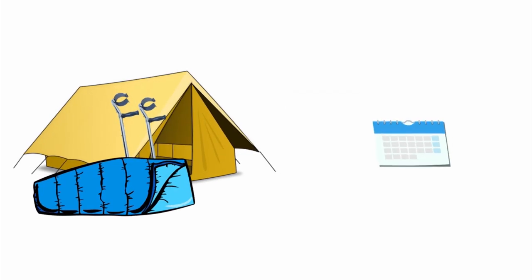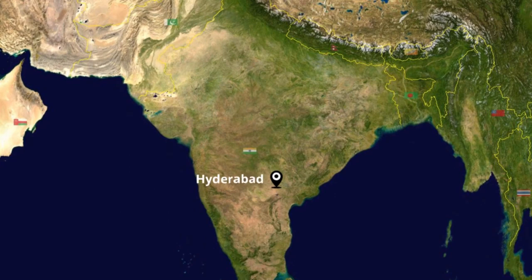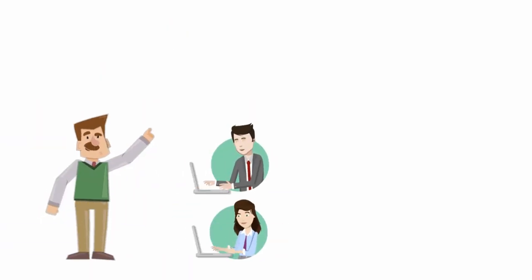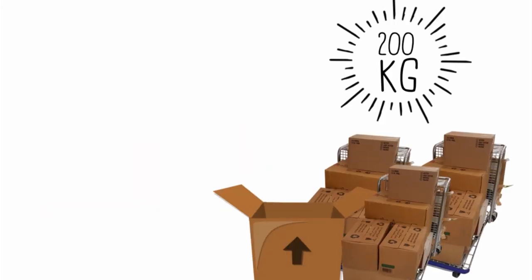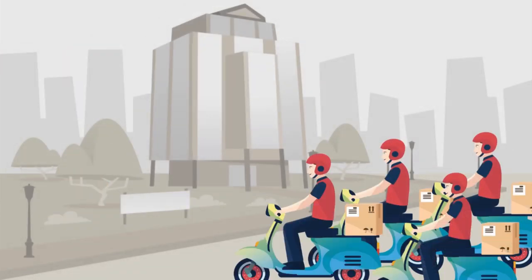The workshop is in 15 days and the equipment has to be transported from the company's office in Hyderabad to the workshop site in Manali. Amir states the delivery requirements he got from Meera to the delivery team. The shipment is over 200 kg, out of which 50 kg needs to reach within 5 days. To make sure everything reaches properly and on time, the delivery team hires people on contract to deliver the shipment in person.